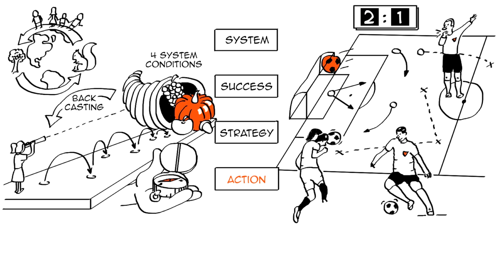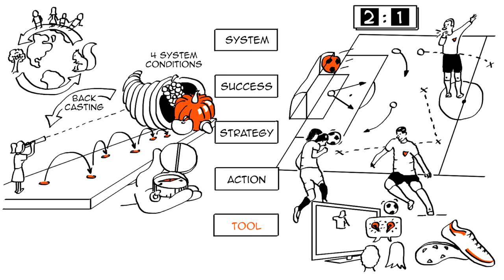Tools were selected to help us understand where we are and make our actions and strategies more effective. In football, it involves gear, practicing, watching videos of the opponent to better understand their strengths and weaknesses. On our sustainability journey, we use concepts and metrics to help us choose the best actions and strategies in order to achieve success in our system.